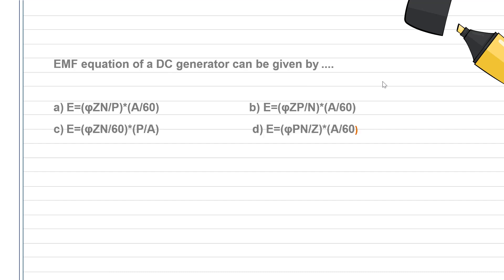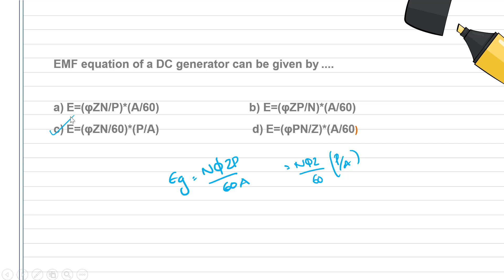The EMF equation of a DC generator can be given by: Eg = (N × Φ × Z × P) / (60 × A). Option: NΦZp divided by 60, into P by A. That is the correct answer.